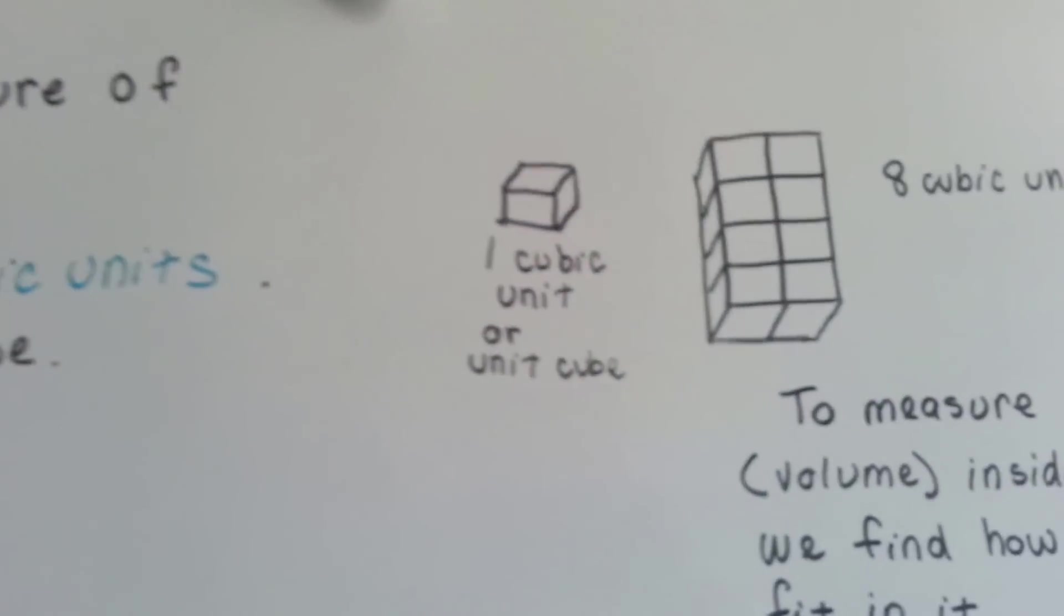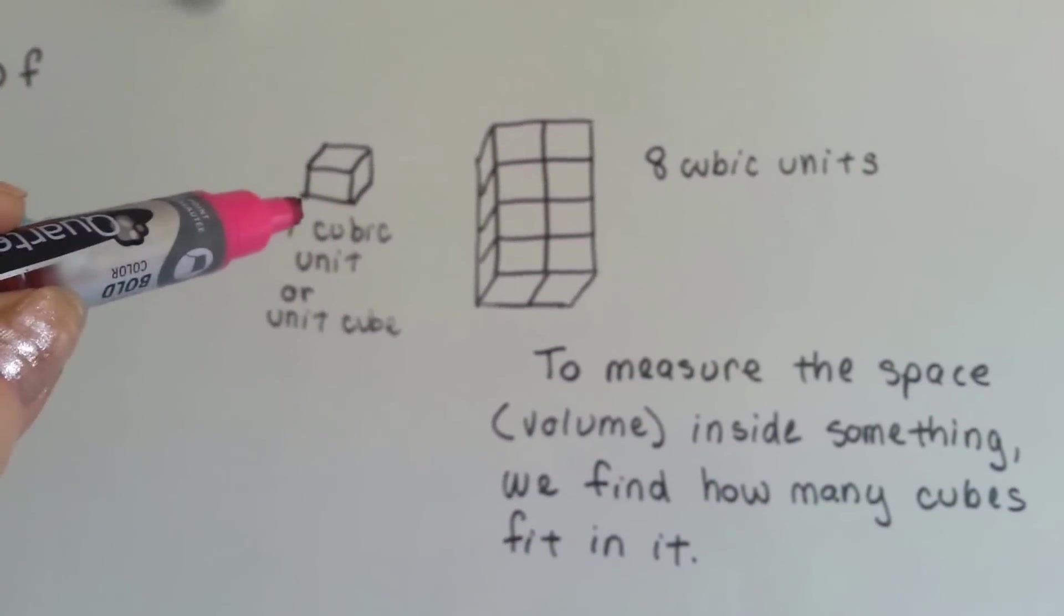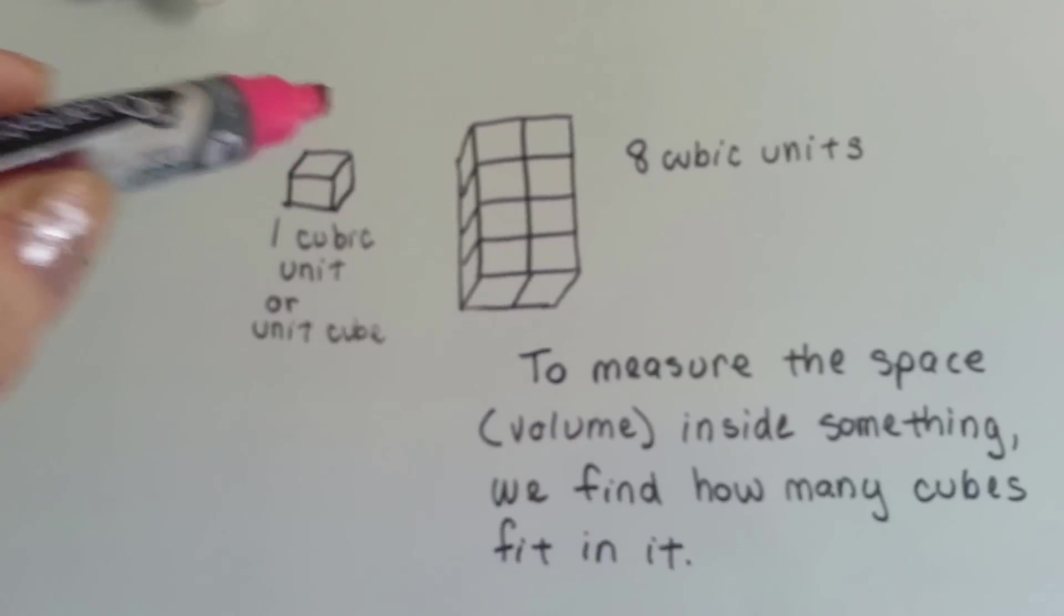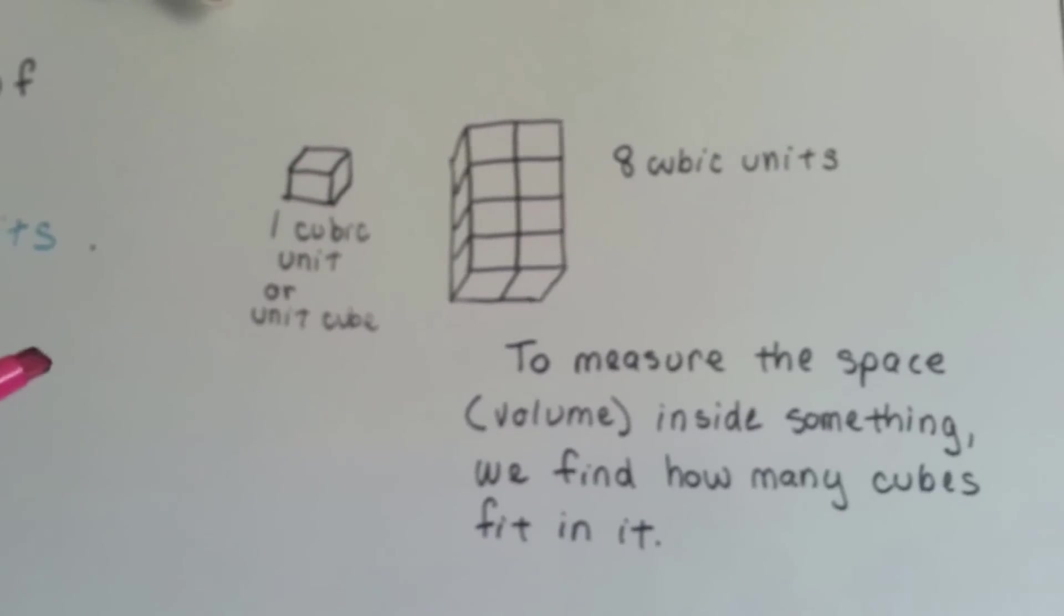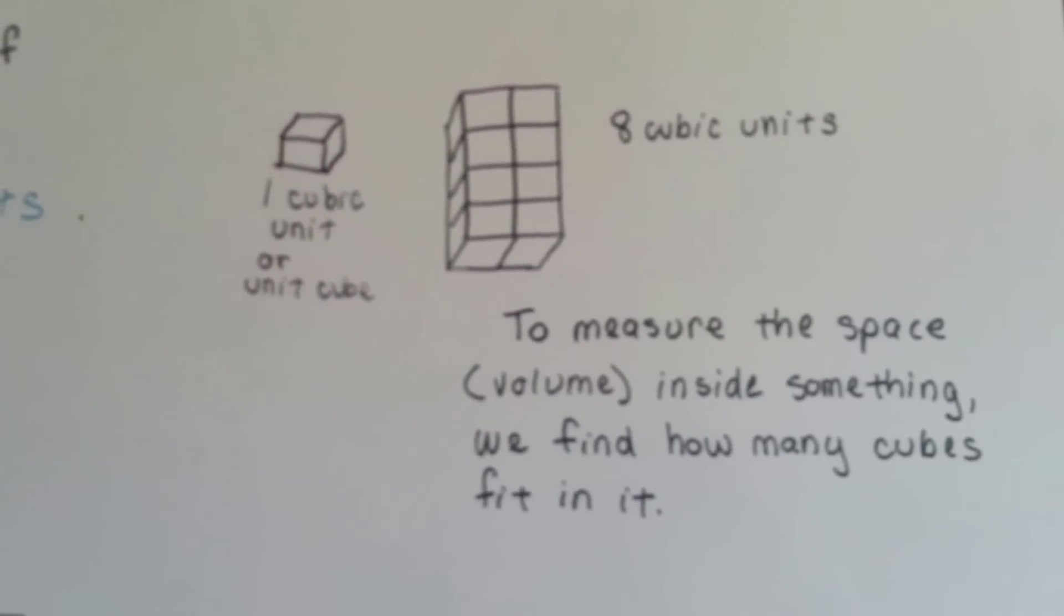A cubic unit is a one unit cube, like that. One little unit. It's a unit this way, this way, and back. So whether it's centimeters or inches or feet, it's one of them in a cube.